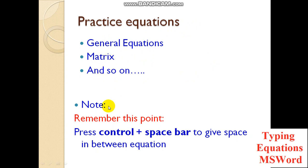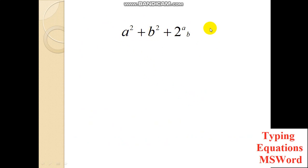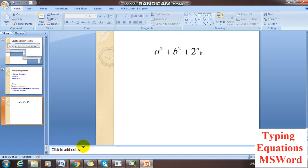An important point to remember: you have to press Ctrl + Space Bar when you are within the equation toolbar. When you are inside the toolbar, the keyboard does not allow you to give a space between characters. So you have to press Ctrl and then Space Bar to insert a space within the equation. This is the equation I have typed here using the keyboard with Microsoft Equation 3.0.